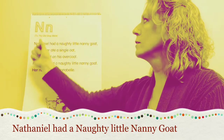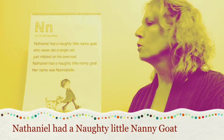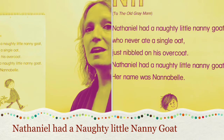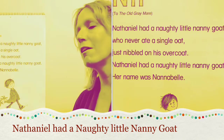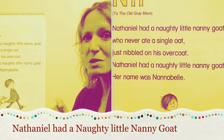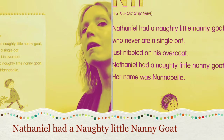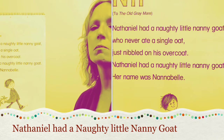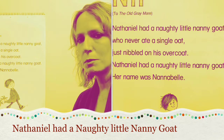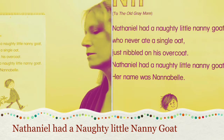All right, this is our N song — uppercase N, lowercase N — and it's sung to the tune of The Old Gray Mare. Are you ready? Nathaniel had a naughty little nanny goat who never ate a single slope, just nibbled on his overcoat. Nathaniel had a naughty little nanny goat. Her name was Nanabelle. You see Nanabelle nibbling on Nathaniel's overcoat. It's a pretty funny song.